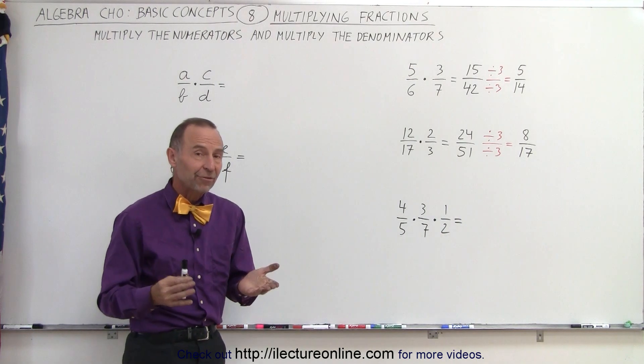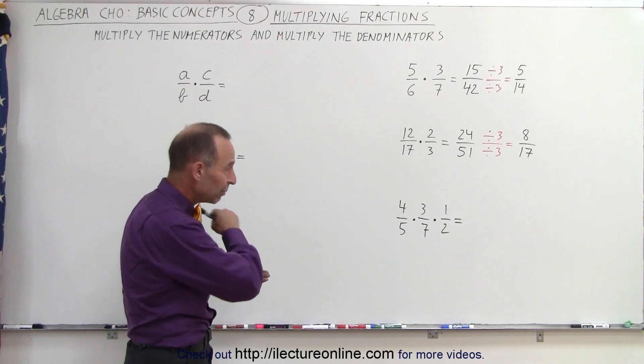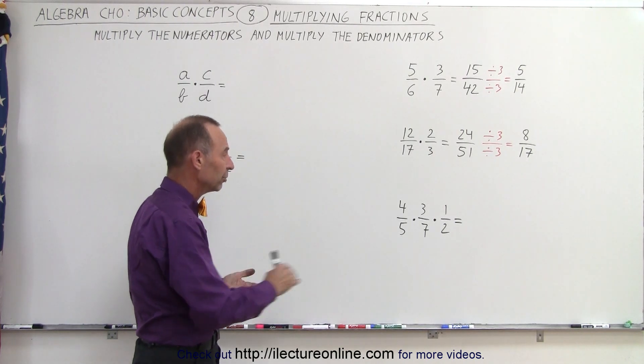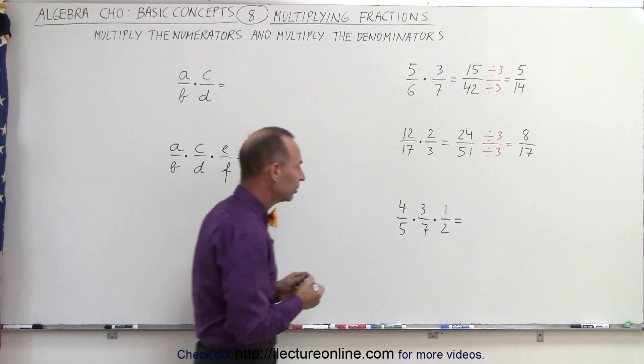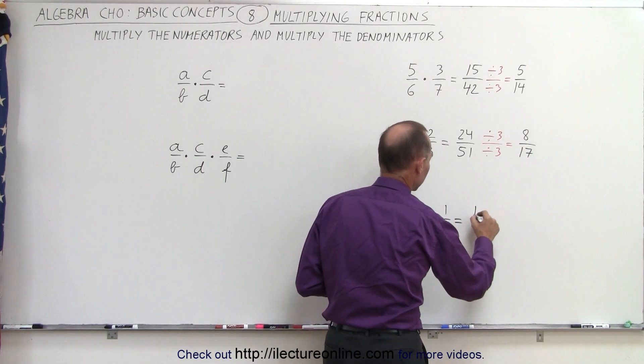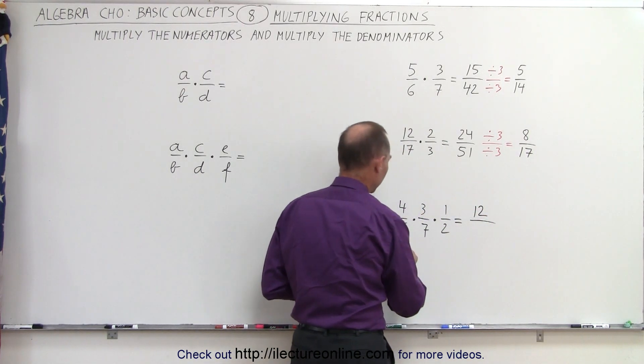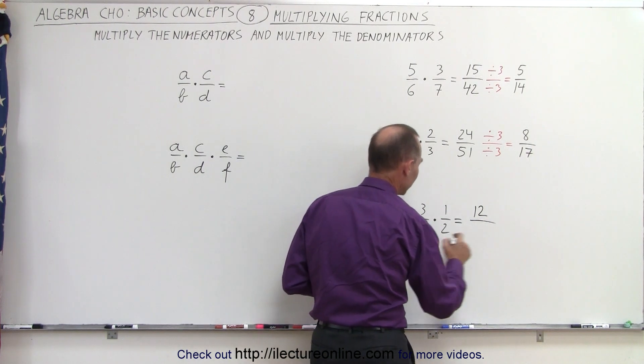What do we do when we have 3 fractions? The rules are still the same. We multiply all the numerators together and multiply all the denominators together. So 4 times 3 is 12 times 1, that's 12 for the numerator. And 5 times 2 is 10 times 7 is 70.